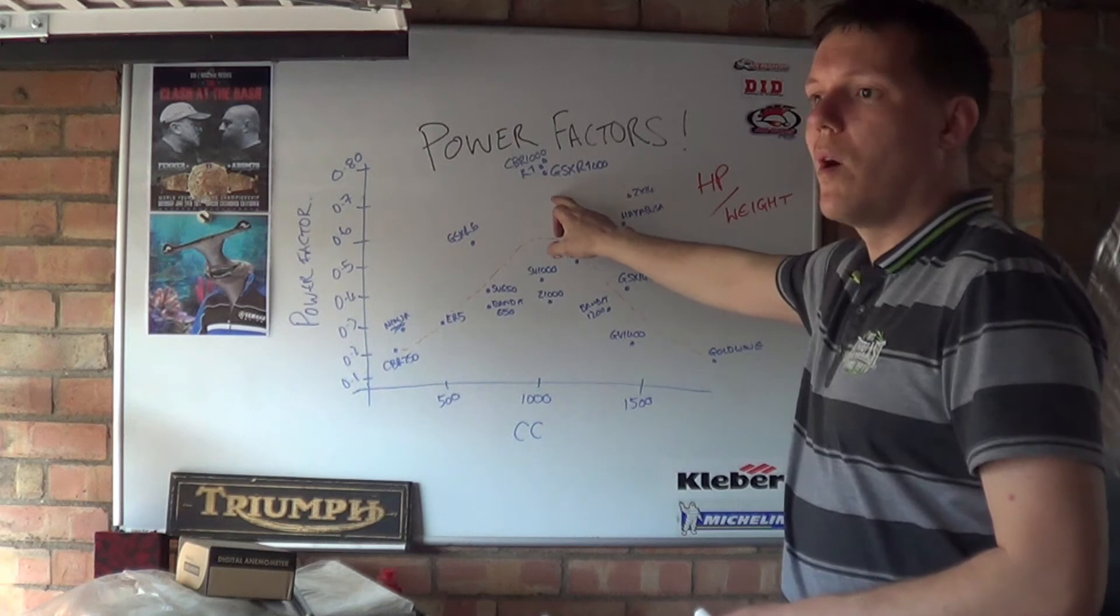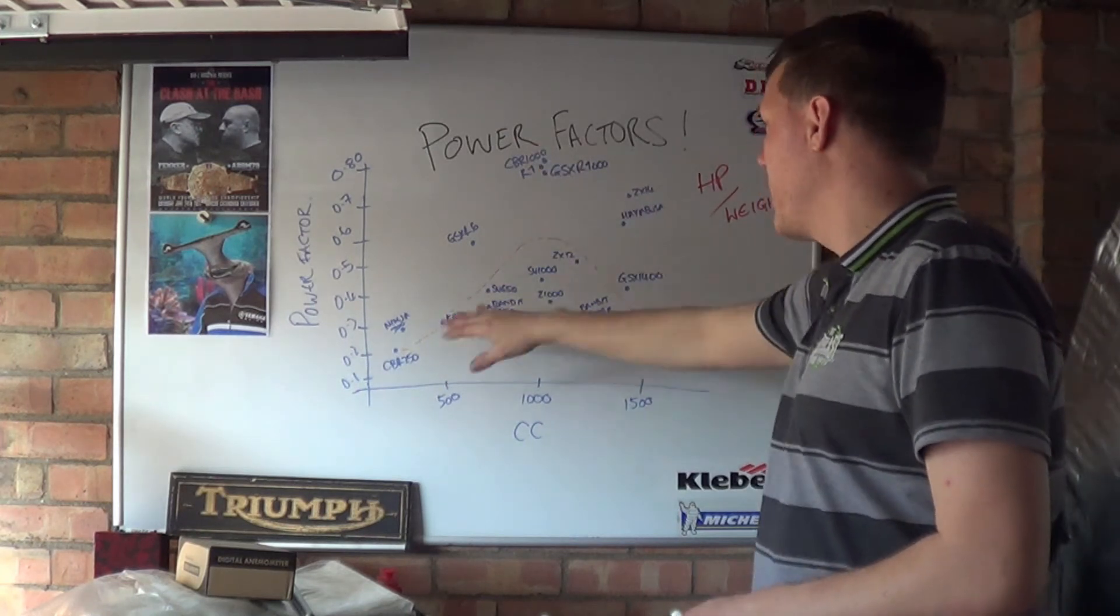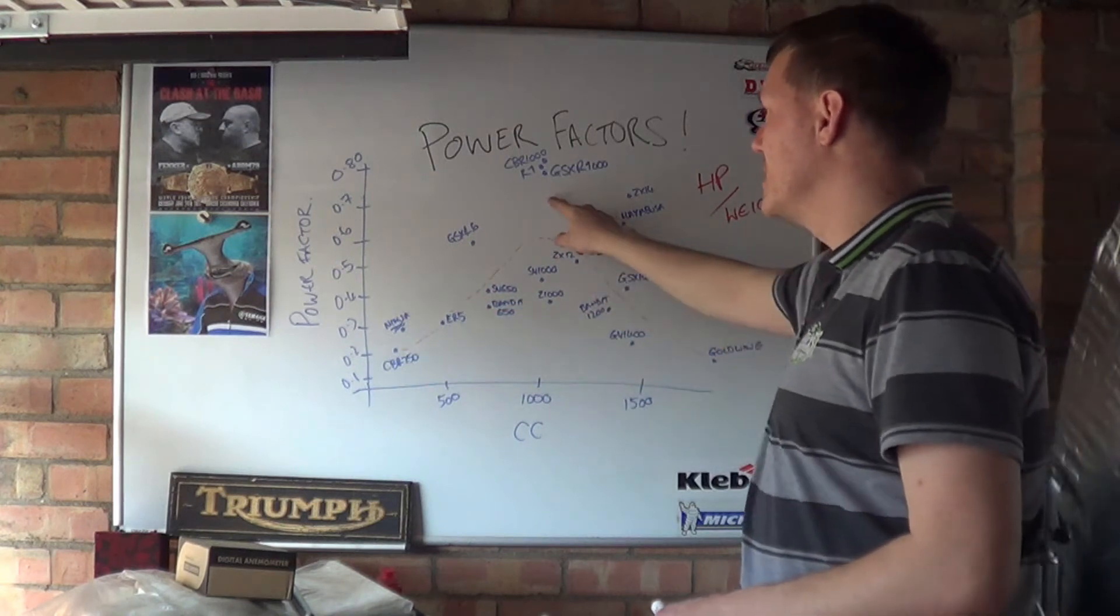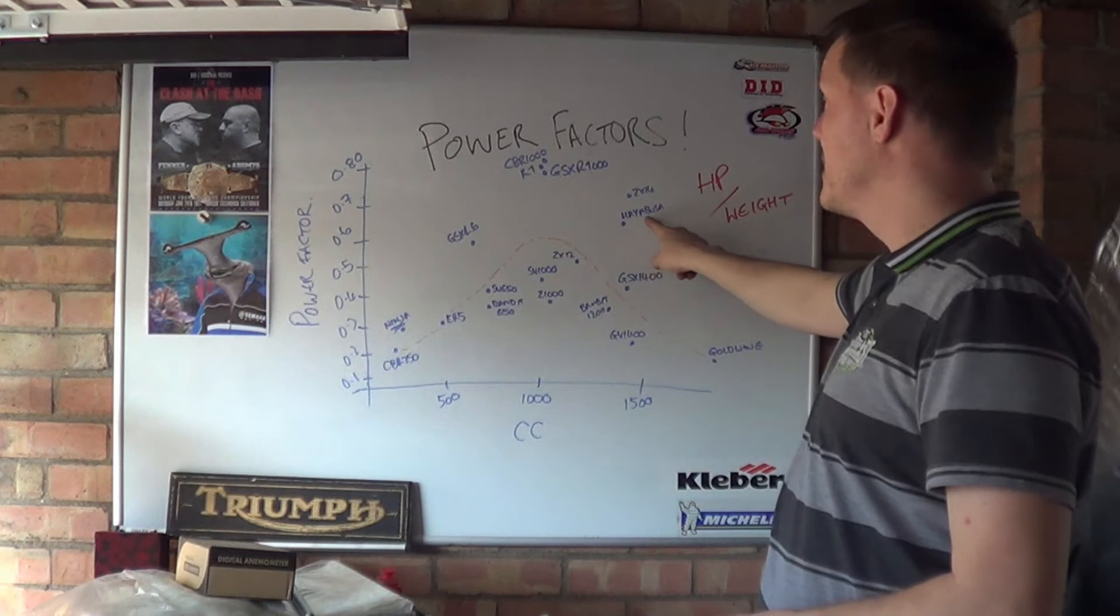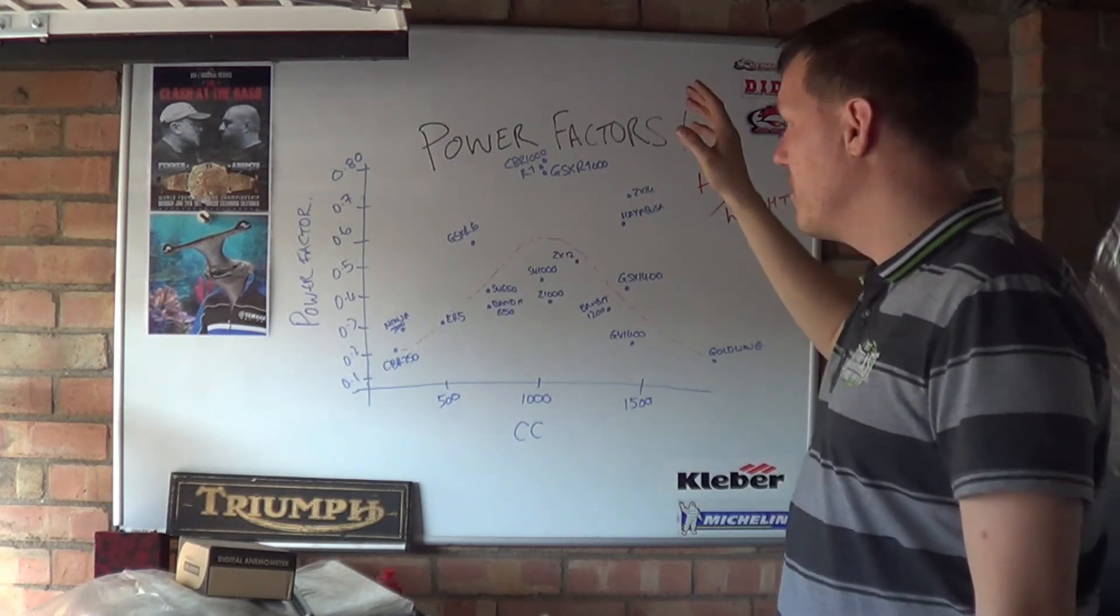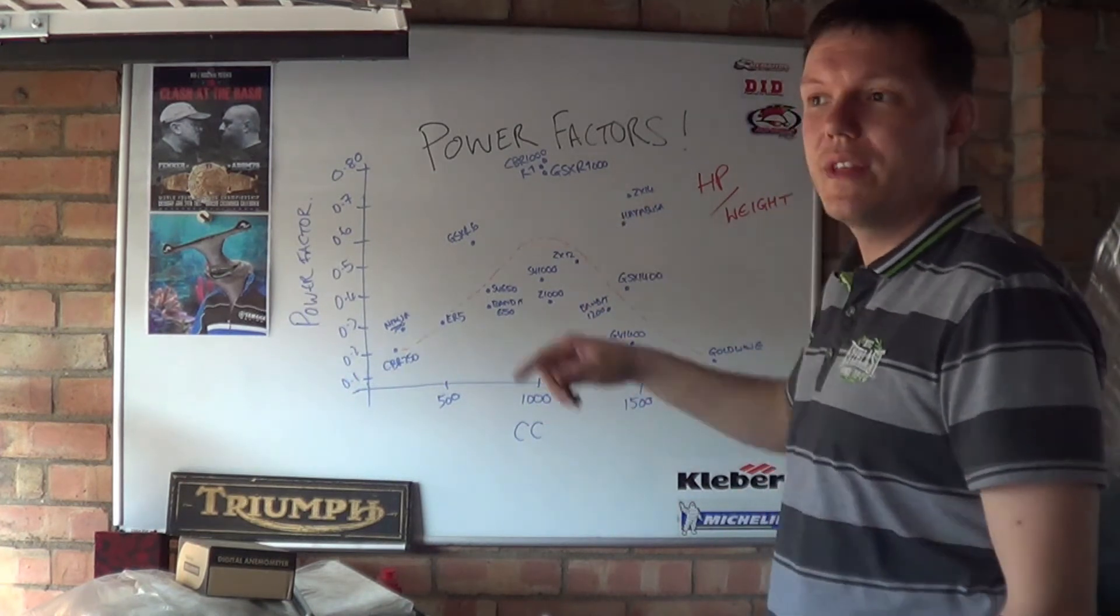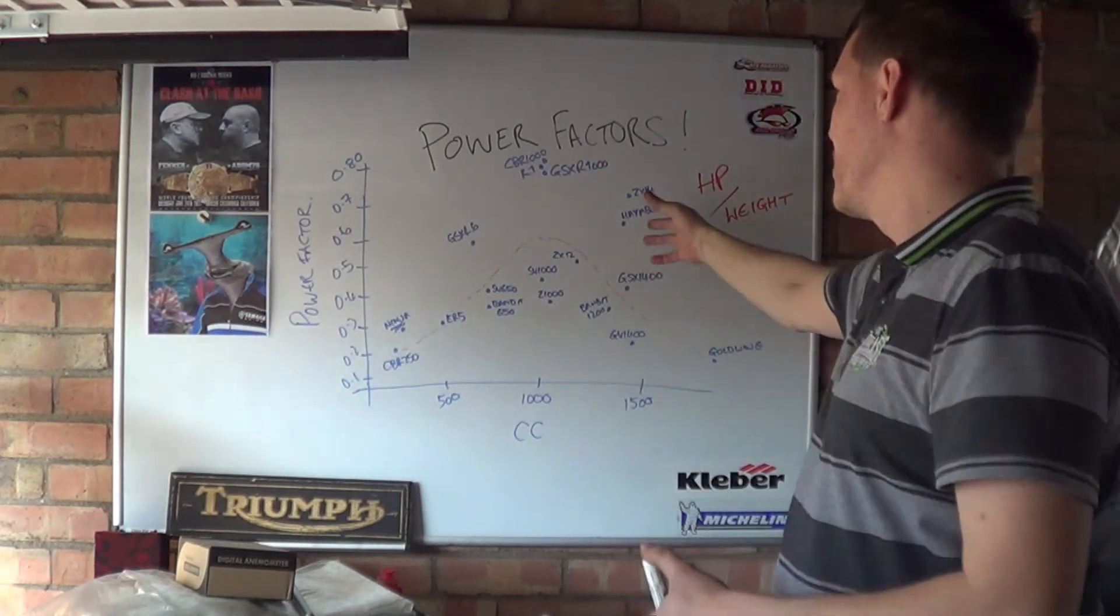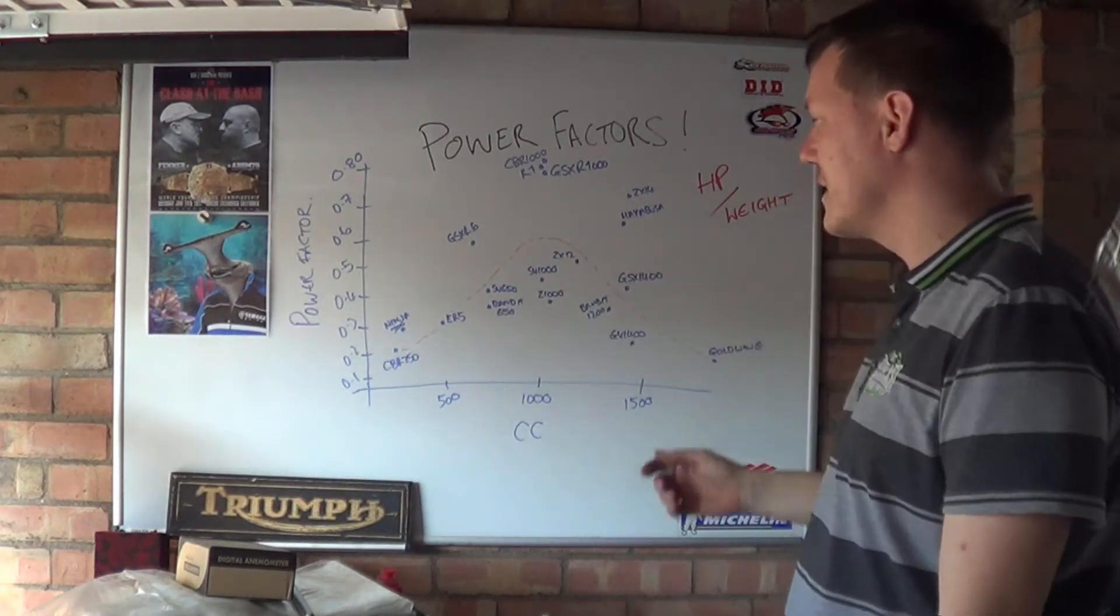And what we're going to talk about is why the 1000 CCs are here and why there's this hump. Yes, there's a hump because of the data, but why are these bikes getting such high power factors compared to Hayabusas and ZX-1400 and stuff? Still powerful bikes, more power than these. But why are they so low? Well, yes, because of the weight, but how come? What's going on? Why is this such a thing like this?